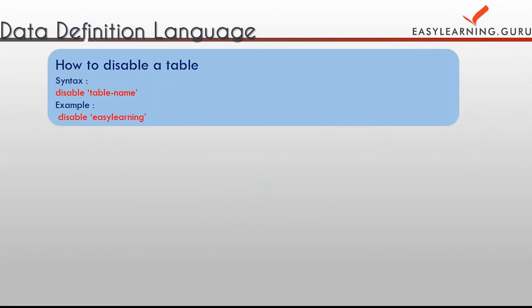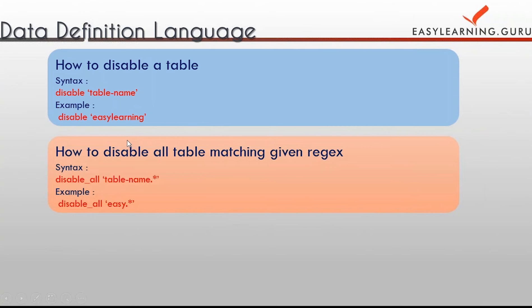The first DDL command is 'disable'. Whenever we want to delete or drop a table, we first need to disable it. To disable a table, we write the command 'disable' followed by the table name — for example, 'disable easy_learning'. This is how we disable a table.